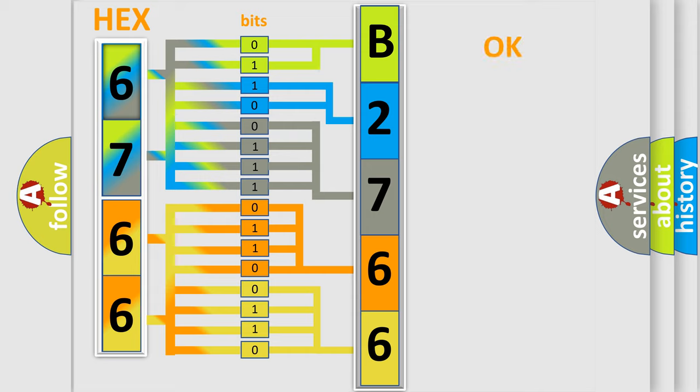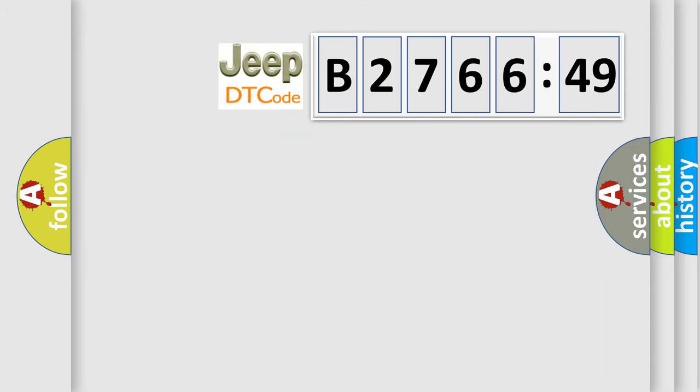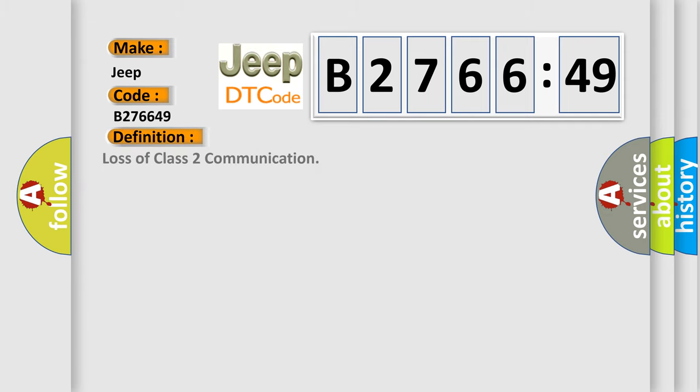We now know in what way the diagnostic tool translates the received information into a more comprehensible format. The number itself does not make sense to us if we cannot assign information about what it actually expresses. So, what does the diagnostic trouble code B276649 interpret specifically for Jeep car manufacturers?